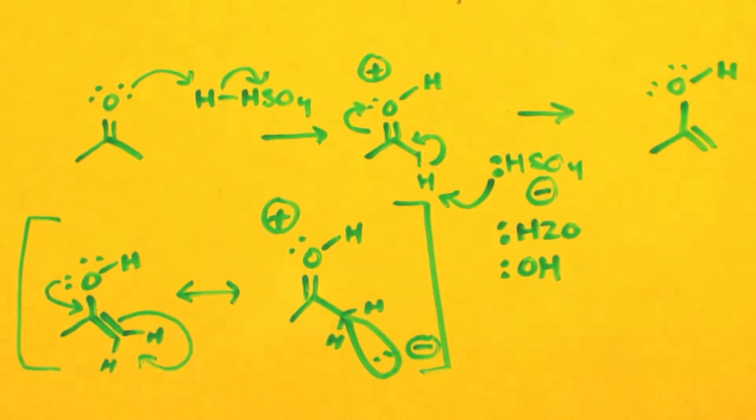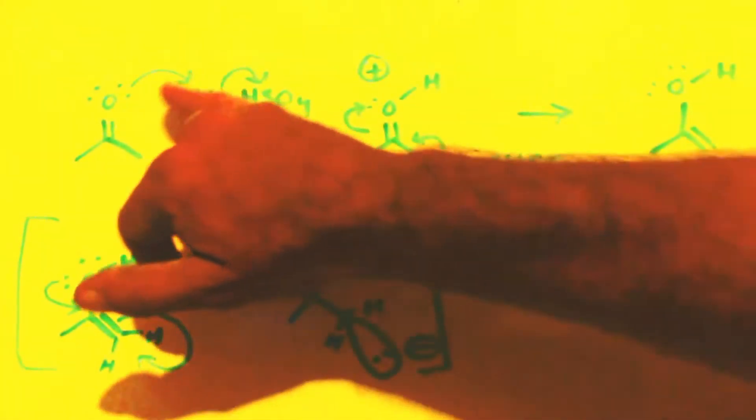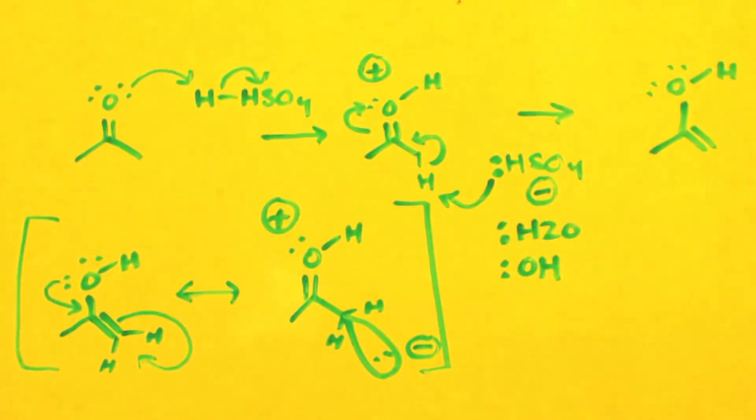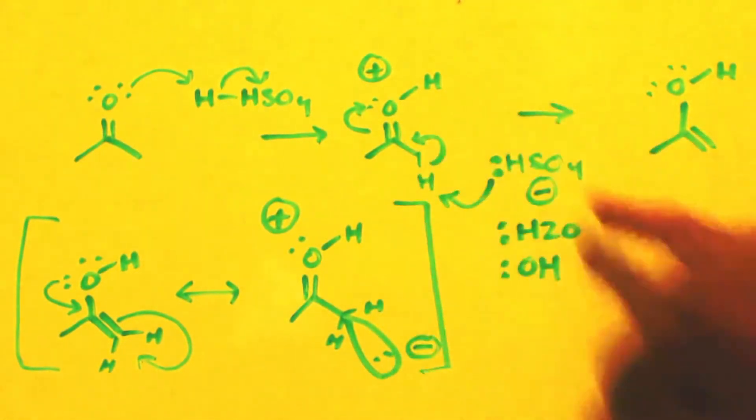You end up with your enol, which is a neutral compound, because you added a proton but then you took it back. So you recreated your sulfuric acid. You only need a catalytic amount. As you can see, you're remaking it.